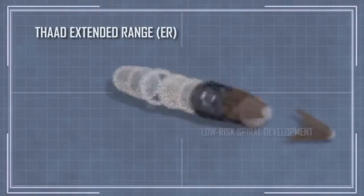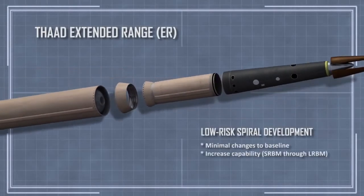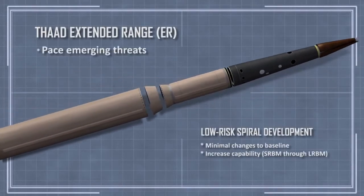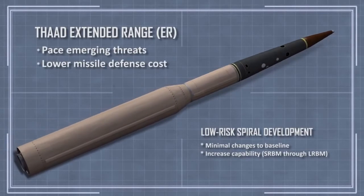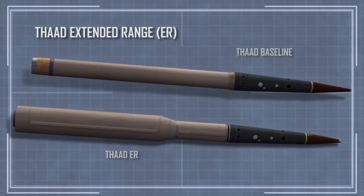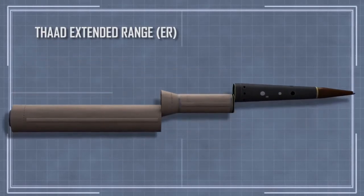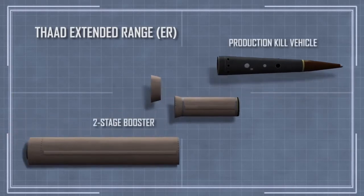THAAD Extended Range, a low risk spiral development of the baseline THAAD system that will help pace emerging threats while lowering the overall cost for regional defense. Fully integrated with existing THAAD batteries, the THAAD ER variant employs a new two-stage booster that will dramatically increase the system's range of flexibility.